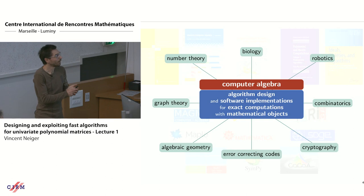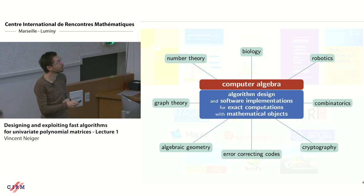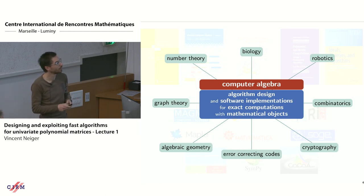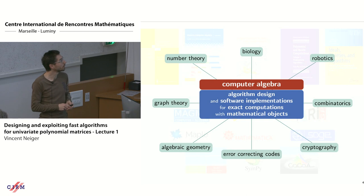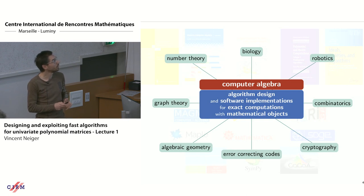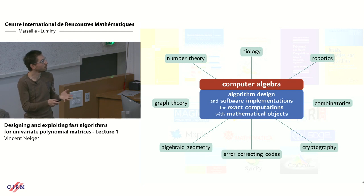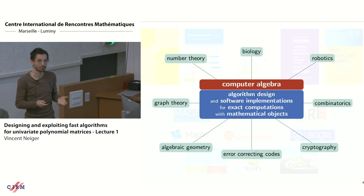Computer algebra has a goal to have applications somewhere. Examples of fields where there are many applications of computer algebra include: biology, where you have interpolation for gene networks; robotics, with lots of applications of Gröbner bases; combinatorics; crypto and coding theory, which I'm going to talk about just afterwards; algebraic geometry; graph theory, which uses linear algebra tools for fast computations; and number theory, where we have complete teams in France devoted to algorithmic number theory.